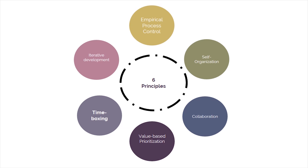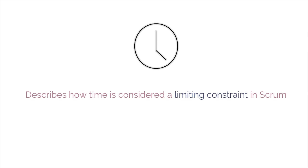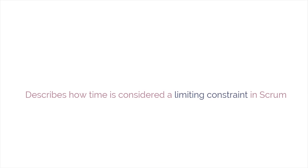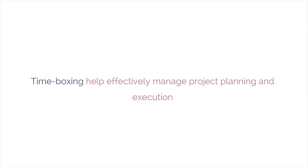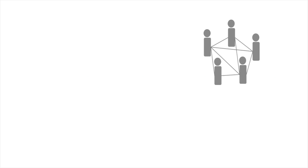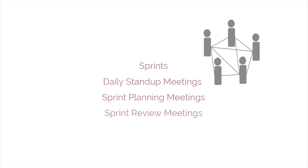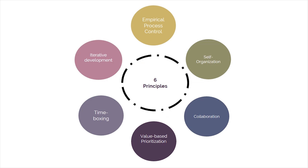The fifth principle is Time Boxing. This principle emphasizes time as a limiting constraint in Scrum. Time Boxing is used to help effectively manage project planning and execution. Time Boxed elements in Scrum include Sprints, Daily Stand-Up Meetings, Sprint Planning Meetings, and Sprint Review Meetings.